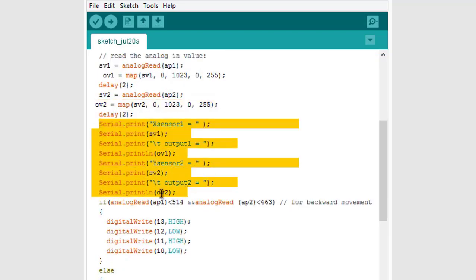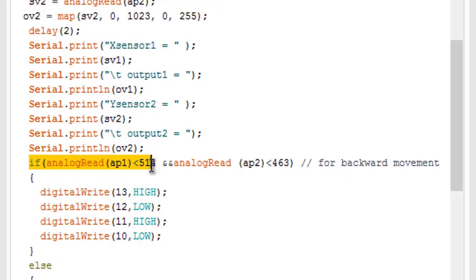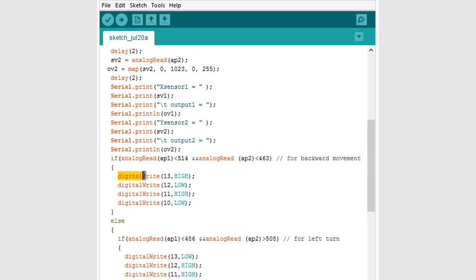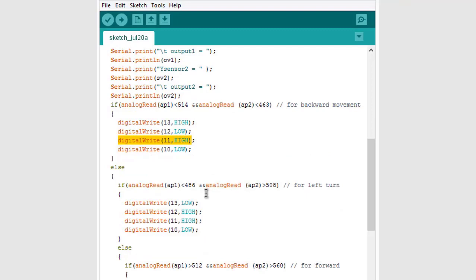This will be displayed on serial monitor if you want to check if the project is working or not. Now there is a comparison between X-axis and Y-axis motion, and on that basis the L293D motor controls the motion - backward, left, forward, and right.